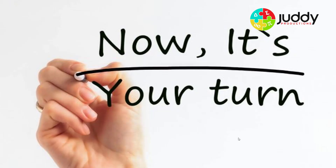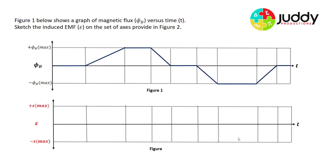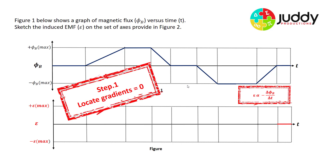Now your turn. Figure one below shows a graph of magnetic flux versus time. Sketch the induced EMF on the set of axes provided in figure two. I recommend you pause the video and try this before checking your answers. Following the same steps: the EMF is proportional to the negative rate of change of flux, which is the same as the negative gradient. Step one: locate the gradients that are zero.